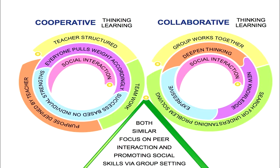In cooperative learning, the teacher plays a central role, whereas in collaborative learning, it is more child-centric — the group works together and searches for understanding, which leads to problem solving. Cooperative learning is more specific whereas collaborative learning is general, although both lead to social interaction. In cooperative learning, the group as a whole gets the reward, but in collaborative learning, both the group and the individual get rewarded.